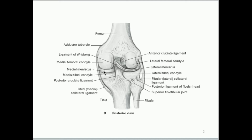Whenever we have too much rotation of the knee, we can actually have damage to the meniscus. One famous example: Andrew Bynum, the center on the Los Angeles Lakers, actually had a torn meniscus and played in the NBA Finals with it. Between games he had to get fluid drained from the knee because it was so damaged.